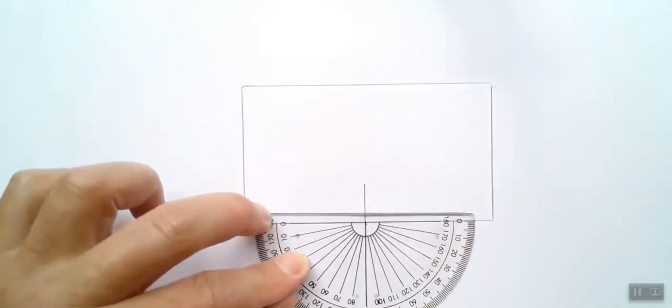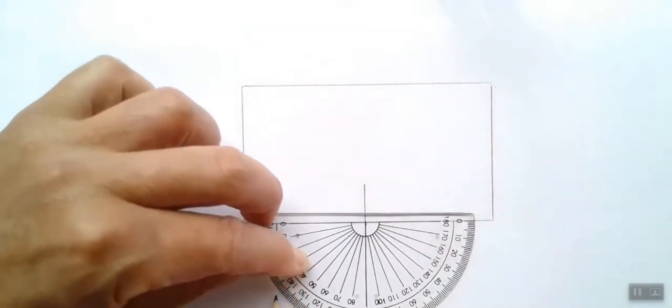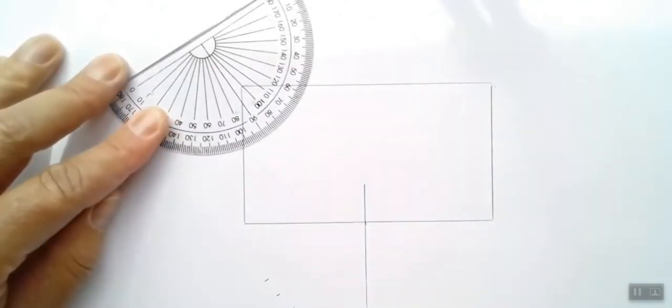After this, you can take your protractor and you can mark on the paper your incident angles that you intend to use, going from 0, 10, 20, 30, 40, 50, up to 60 degrees.